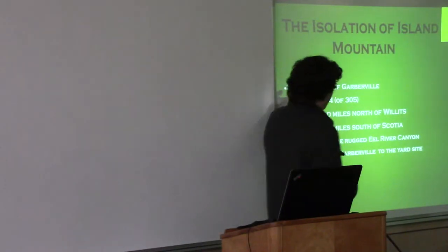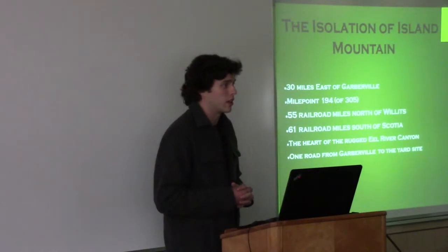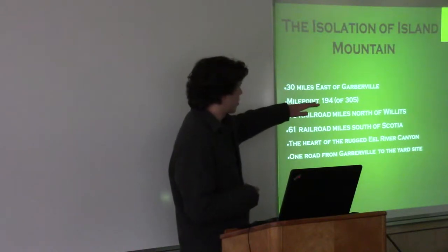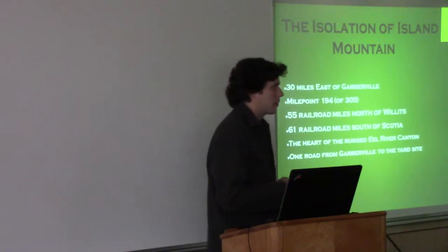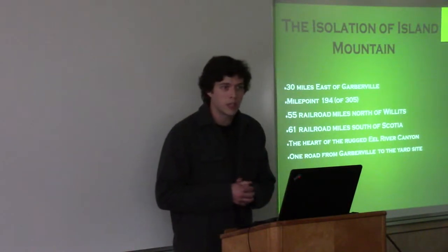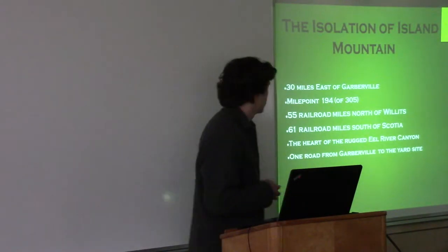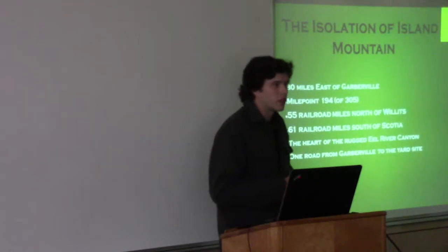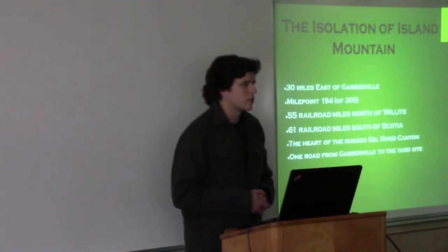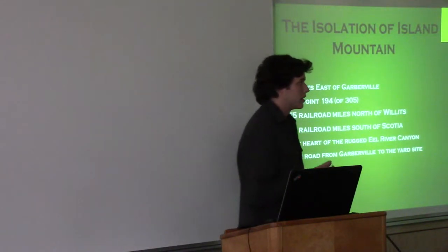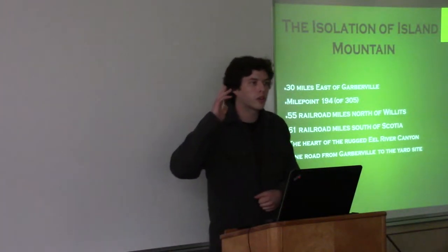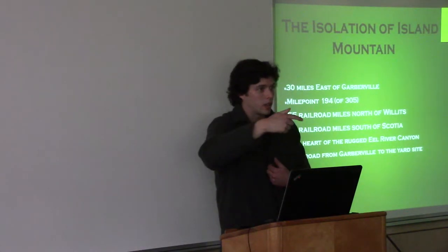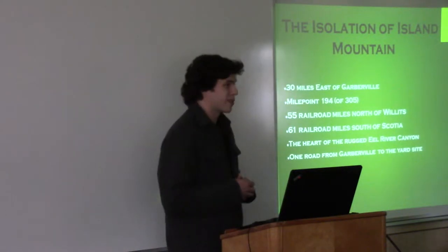So, why Island Mountain? I think it's fitting that we're in Redway because it is roughly 30 miles east of this area. It's mile point 194 of 305. The mileposts count from 1st and Market Street, San Francisco, because that was Southern Pacific headquarters. It's 55 railroad miles north of Willits and 61 railroad miles south of Scotia, really in the heart of the rugged Eel River Canyon. The other thing that's really important to know is in the old days, northbound crews would meet at Island Mountain, southbound crews would meet at Island Mountain. They would come together, and then the crews, if they were coming from Eureka, could go to Island Mountain, swap trains, and end up at home.